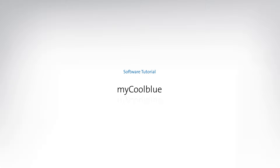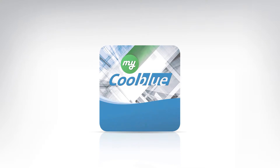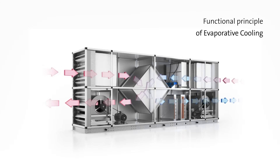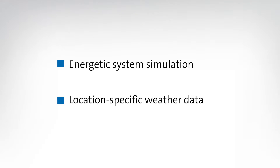This video will show you how you can use simulation to calculate the energy-related benefits and savings potential of an evaporative cooler. Indirect evaporative cooling is a sensible option in terms of energy consumption and can significantly reduce the operating cost of a building cooling system. However, a reliable estimate of the actual savings potential requires simulating the planned system using weather data for the building's future location.